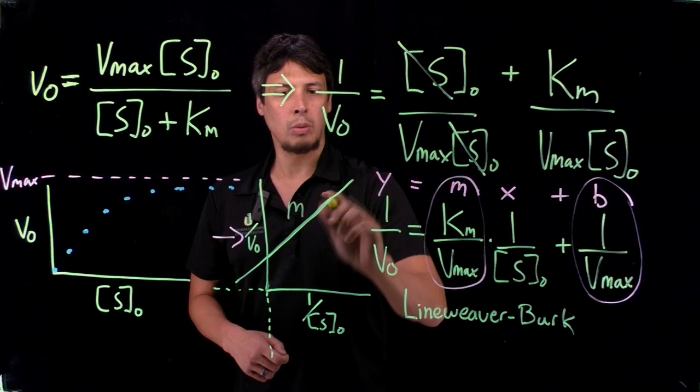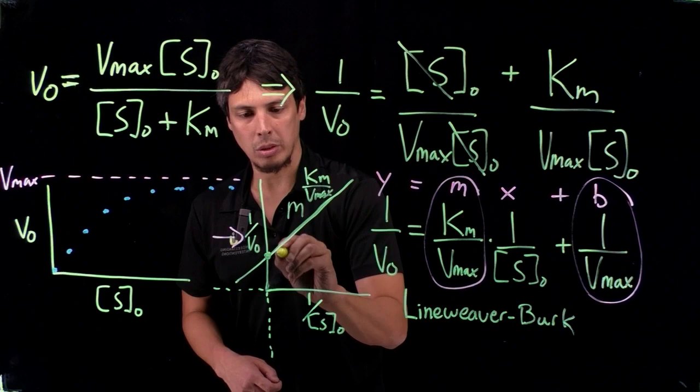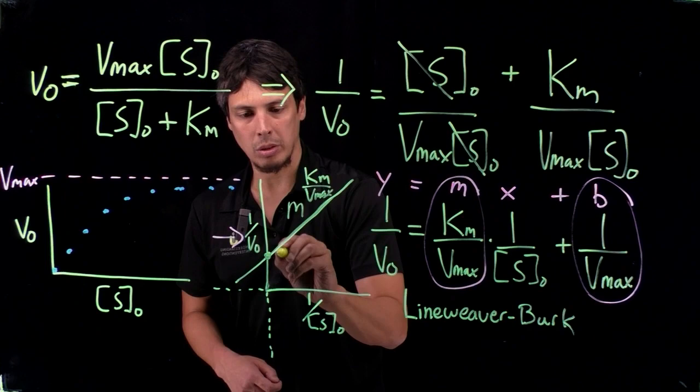That slope is going to be equal to Km over Vmax, and this intercept, the Y-intercept, is going to be equal to 1 over Vmax.